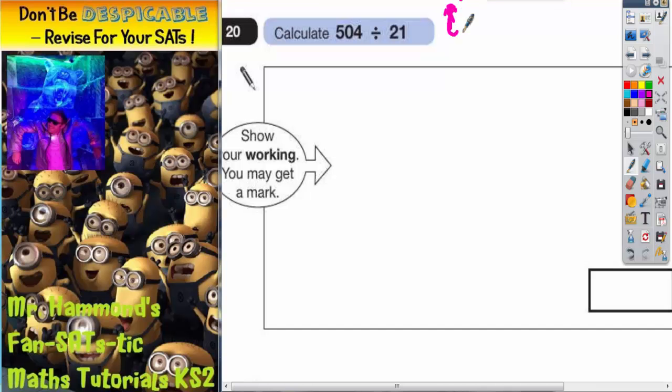And the chunking method is basically all about repeated subtraction. So we're going to subtract chunks of 21 away from 504 until we've got nothing left. And the way we set it up is this.